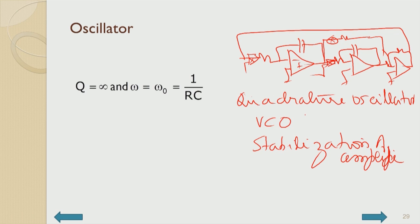That was a control system which itself can be second order. Understanding the total system - taking care of voltage-controlled frequency and amplitude stabilization - is only possible by making the models of all these things simple when considering the whole system, then understanding stabilization first, then going into VCO operation, then oscillation with Q equal to infinity. These things must be done step by step, bringing in complexity only step by step.